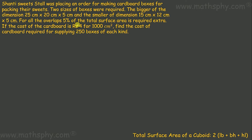We have to find the cost of cardboard required to make these boxes. For all the overlaps, 5% of the total surface area is required extra. So let's calculate the area of each box, then take 5% overlap and add it to the total area.